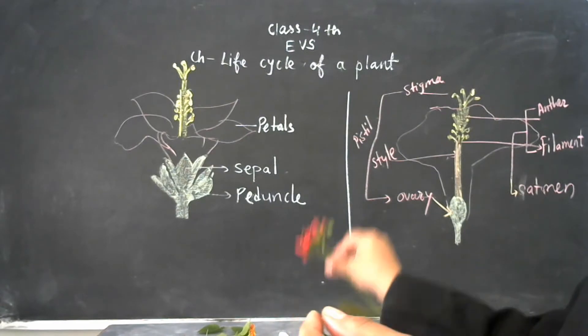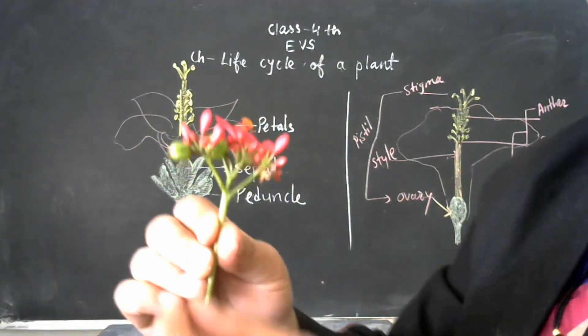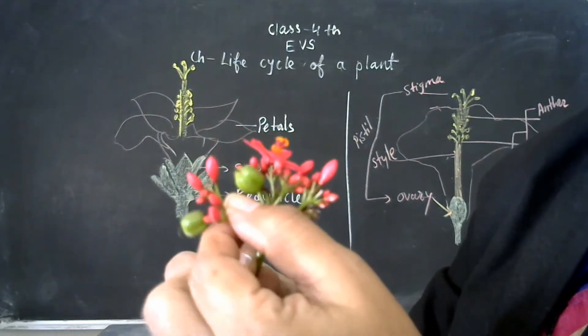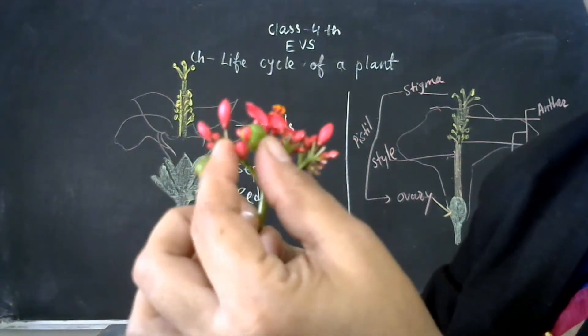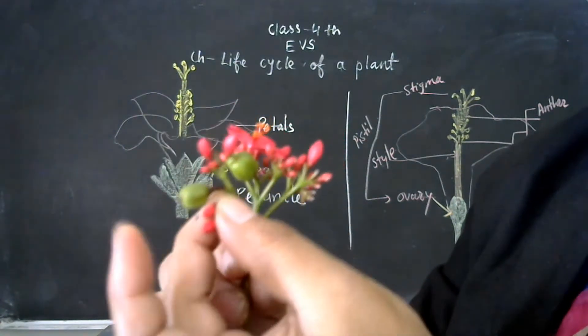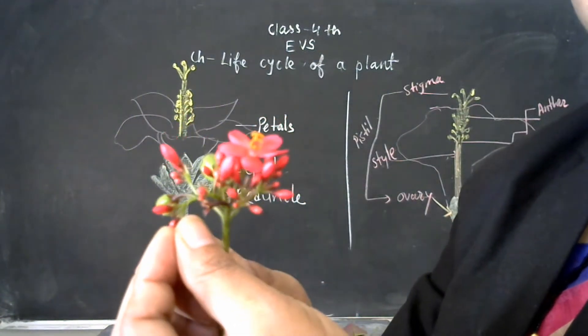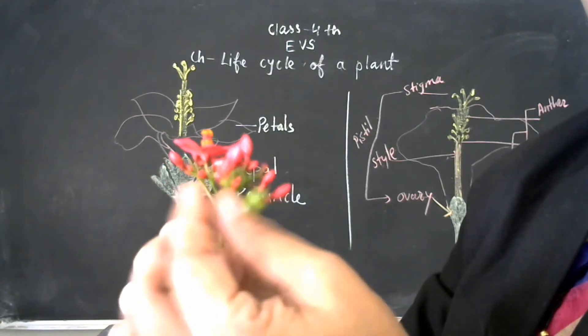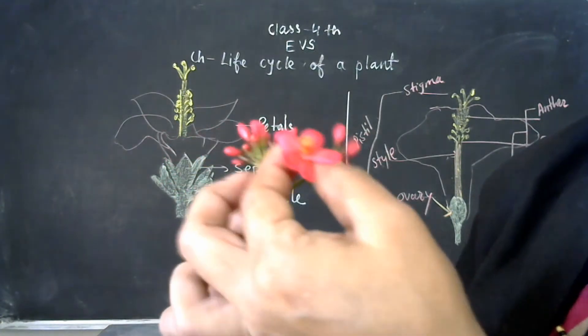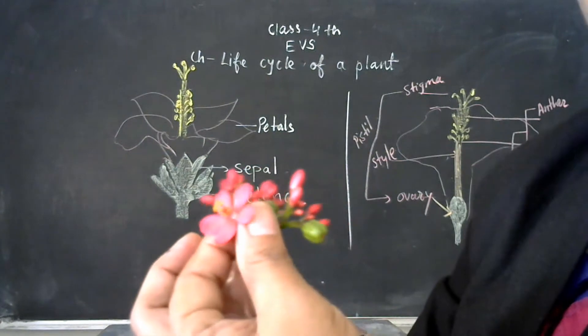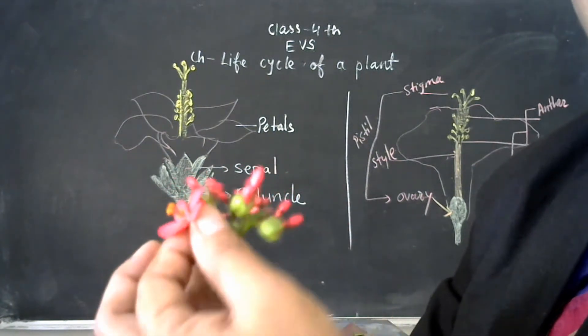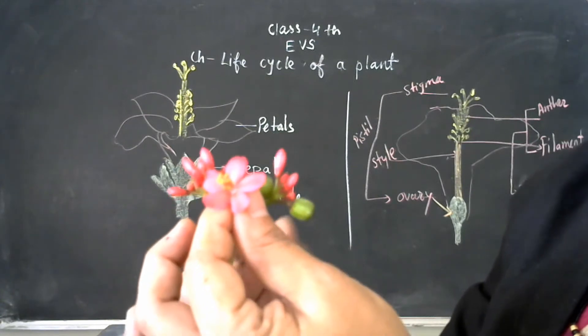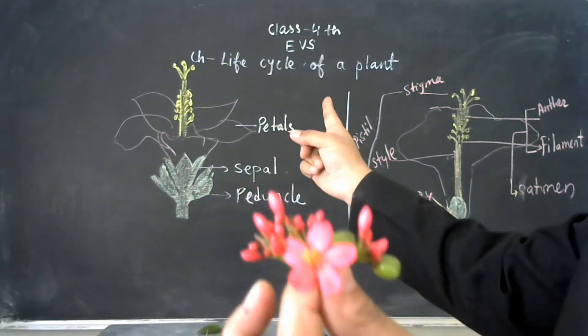Again, I have told you earlier that after flowers, the next stage is fruits. Here you can see these fruits also in these flowers. Can you see? Buds are also there, flowers are also there. And see, all parts of flowers in this flower, you can see clearly, as we have drawn the diagram of this flower.